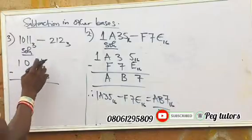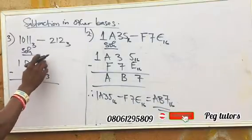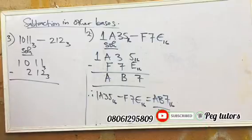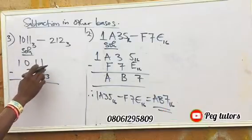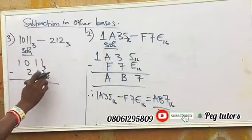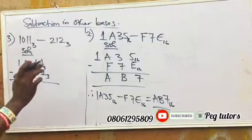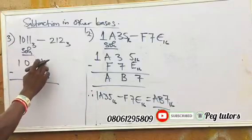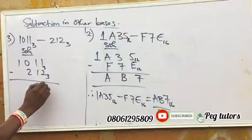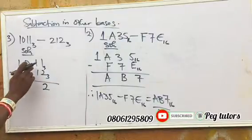Now, remember, you have to subtract 2 from 1. And subtracting 2 from 1 will not be possible. So you borrow 1 from here to this place. As usual, we are operating in base 3 here. So any number you borrow assumes 3. So 3 plus 1 will give us 4. 4 minus 2 now will give us 2 here.